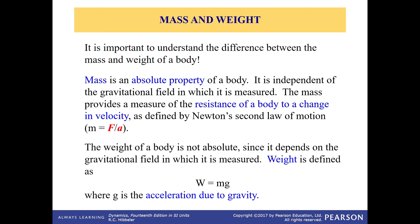Weight is defined as W = Mg, where the mass obtained from Newton's second law is multiplied by g — the acceleration due to gravity. On Earth, g equals 9.81 meters per second squared.